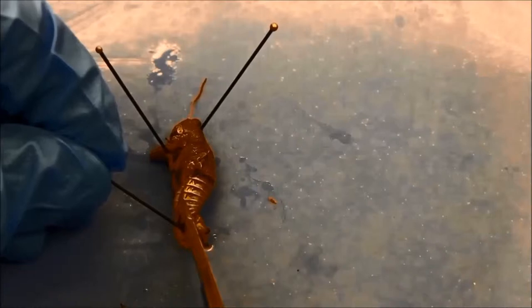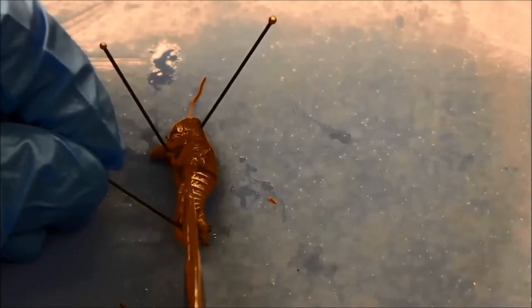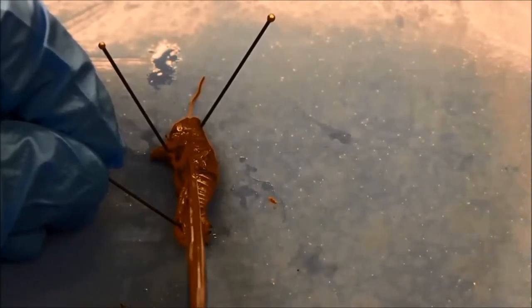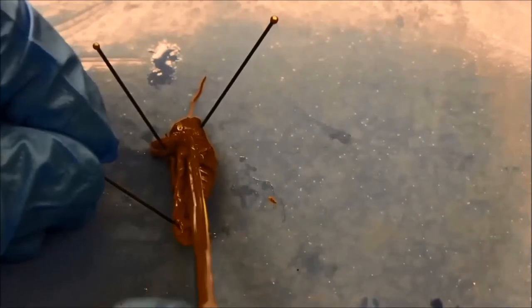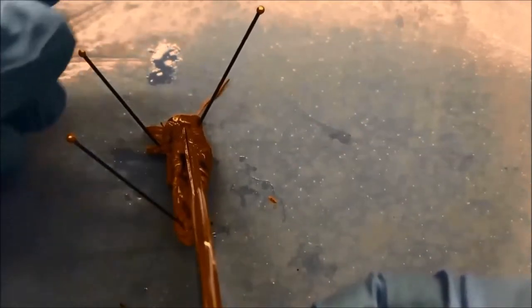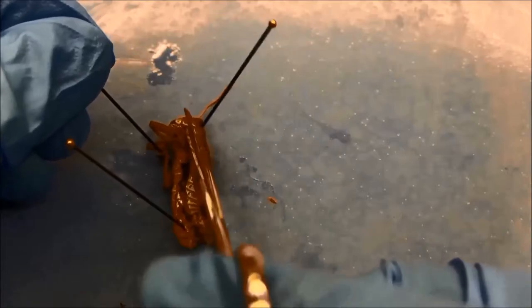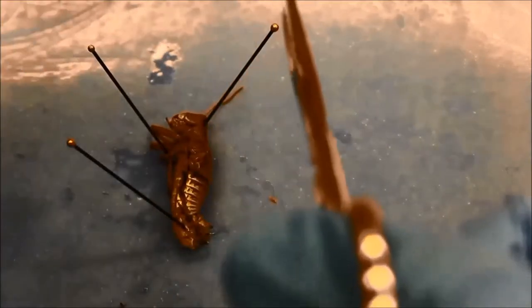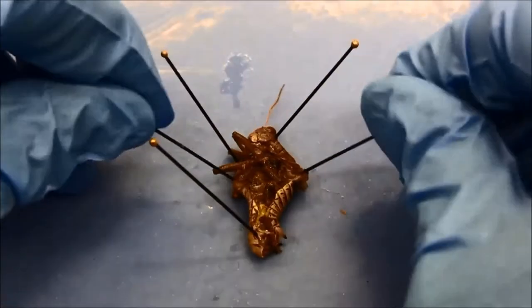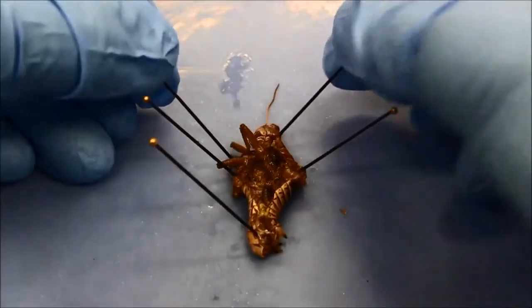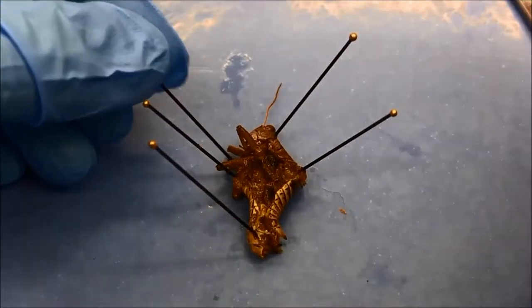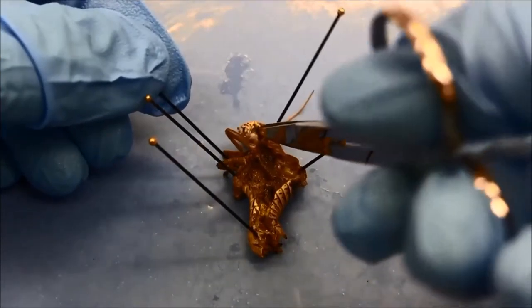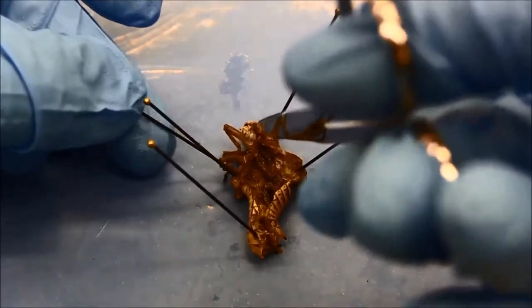Then I use scissors to cut the exoskeleton of the grasshopper along the side. I start with the last segment of the abdomen and move slowly towards the head. I open the internal cavity so that I can see the digestive system. You can also make an additional cut if needed.